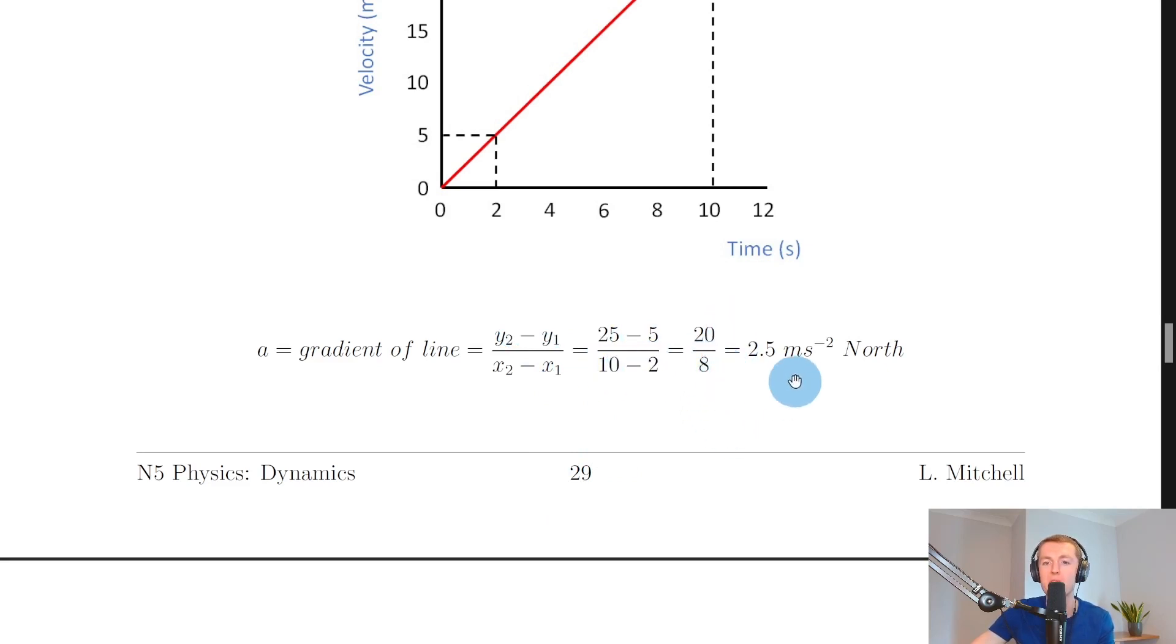That then gives us 20 divided by 8, which is the same as 2.5 meters per second squared. But remember, acceleration is a vector quantity, so we want a direction there as well, which is north. And remember, north was given in the question, so we can state that as our direction.